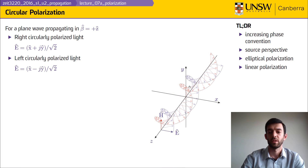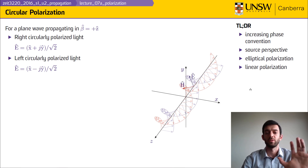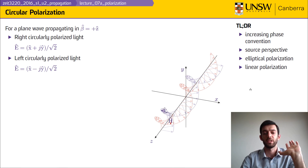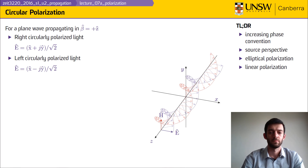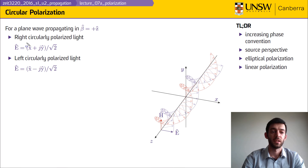We can also have left circularly polarized (LCP) light. If you position E and H at the initial point and let them propagate, placing your thumb along the direction of propagation, they follow the left hand rather than the right hand. The key point is that for circular polarization the x and y components of the electric field must be 90 degrees out of phase with one another. Right circularly polarized light has components x + jy, and left circularly polarized light has x − jy.